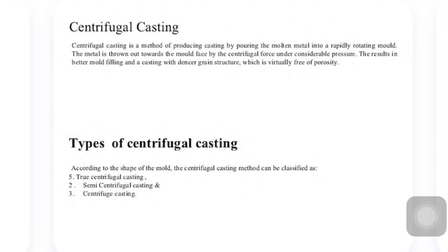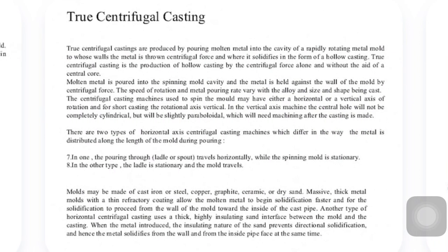According to the shape of the mold, centrifugal casting is classified under three categories: true centrifugal casting, semi-centrifugal casting, and centrifuge casting. From a syllabus point of view, true centrifugal casting and semi-centrifugal casting are very important, but centrifuge casting is not included in the syllabus.